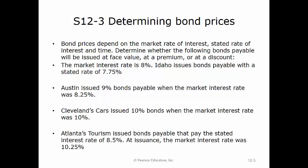Bond prices depend on the market rate of interest, stated rate of interest, and time. This problem asks us to determine whether the following bonds will be issued at face value, at a premium, or at a discount. The market interest rate is 8%, but Idaho issues bonds with a stated rate of 7.75%. Since the market rate exceeds the stated rate, these bonds would be issued at a discount.